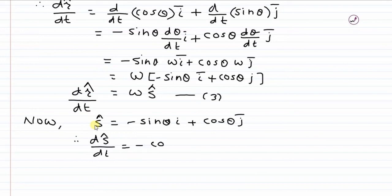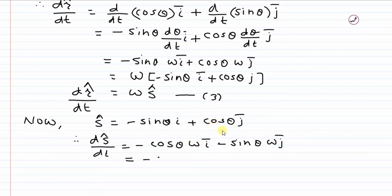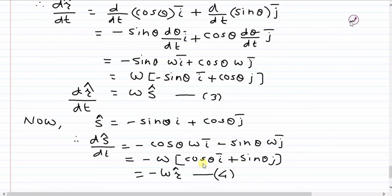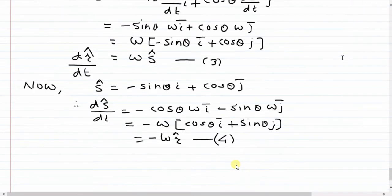Now differentiating s-cap with respect to t: the derivative of sin theta is cos theta times omega, and the derivative of cos theta is minus sin theta times omega. Taking minus omega common, we get minus omega times cos theta i plus sin theta j, and this value is nothing but r-cap. So d s-cap by dt equals minus omega times r-cap.